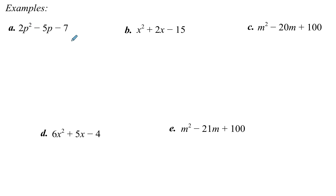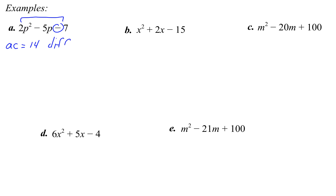So here we go. We don't have perfect squares and we don't have a difference of squares. We're going to multiply the two outside numbers together. Making sure we're in standard form — we are. 2 times 7 gives us 14, so our product a times c is 14. This sign is minus, so we want factors of 14 that differ. They differ by 5 — which is the middle term b.